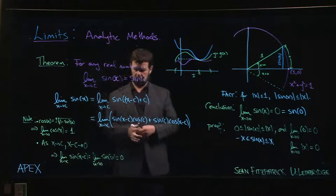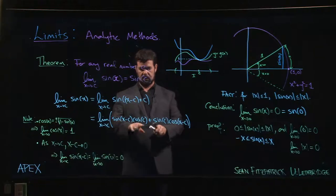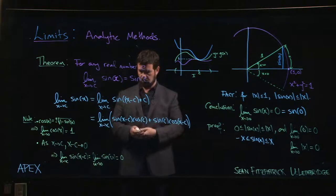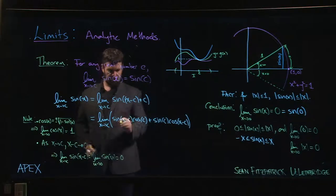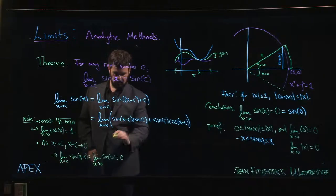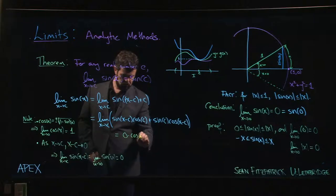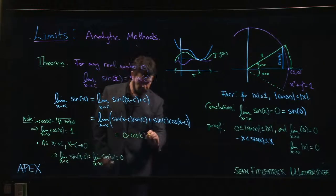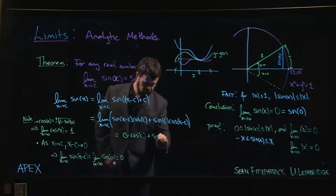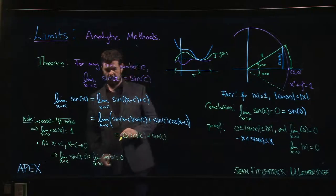So using the limit laws, this is a constant. We can use the sum rule. We can use the product rule. And so we break things down. We say, so this limit is 0, so 0 times cos c, sine of c times the limit as x goes to c of cosine of x minus c.